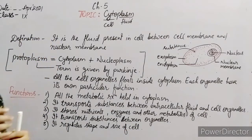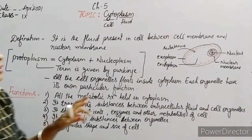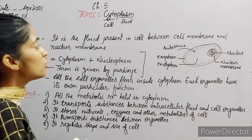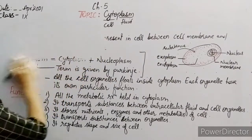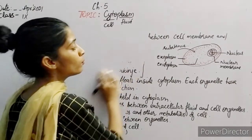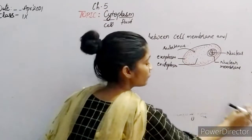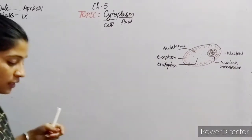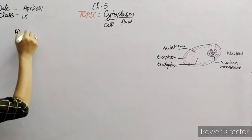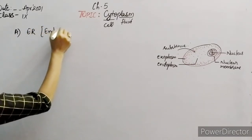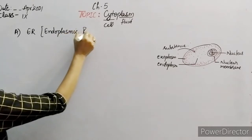This is all about cytoplasm. Now next we will talk about the organelles one by one which are present in this cytoplasm. The first organelle we will start with is the endoplasmic reticulum, or ER.